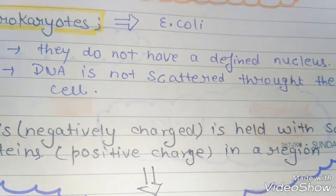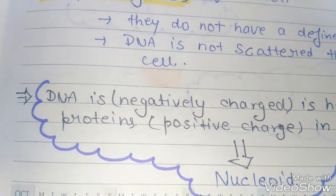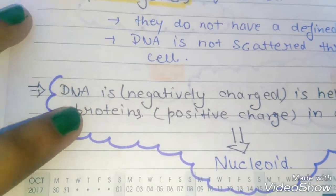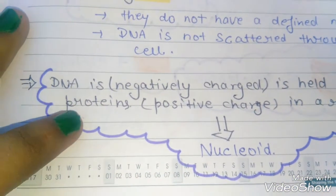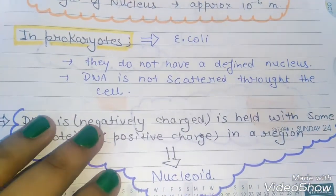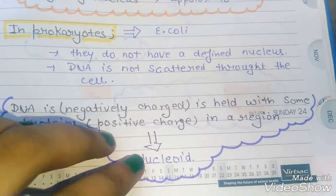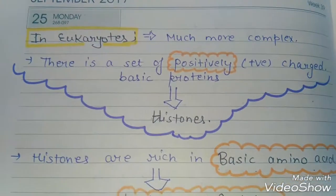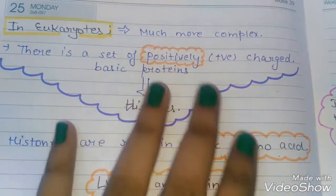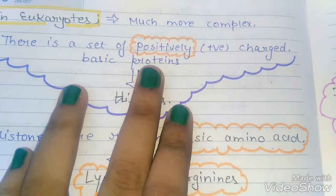DNA is negatively charged. In prokaryotes, which don't have a defined nucleus and are much more simple compared to eukaryotes, the DNA is held together by proteins. There is a set of positively charged basic proteins.